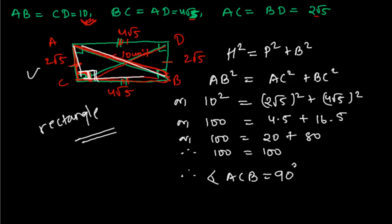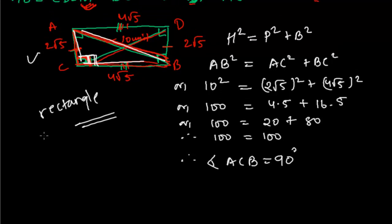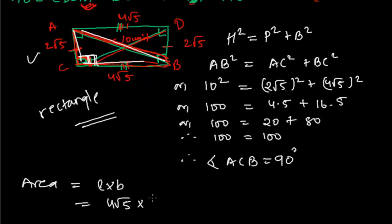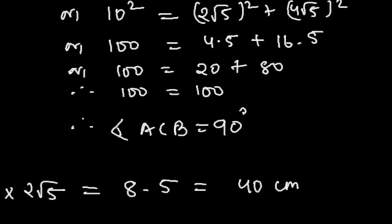Now the question also asks for the area. Area of rectangle = length × breadth = 4√5 × 2√5 = 8 × 5 = 40 square units. So the area of the rectangle is 40 square units.